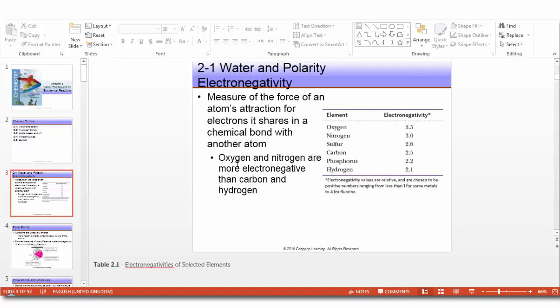We want to introduce something called electronegativity. It is the ability of an atom to attract electrons to its own and it is a measure of the force of an atom's attraction for electrons it shares in a chemical bond with another atom. This sharing could be equal or unequal. Oxygen and nitrogen are more electronegative than carbon and hydrogen. If you look at the table here, you see oxygen tops the rest in electronegativity value and hydrogen has the lowest value.